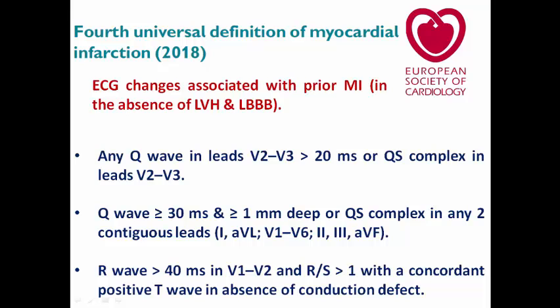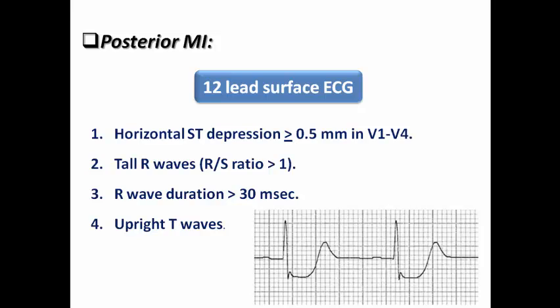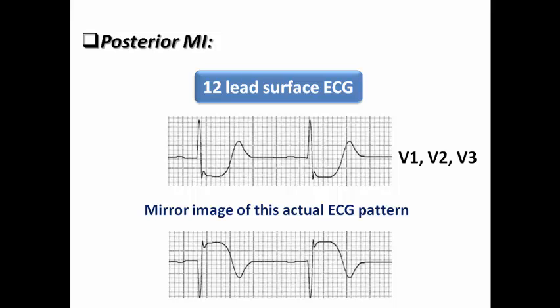Any one of these criteria can indicate prior MI. The last criterion — R-wave duration exceeding 40 ms with R/S ratio more than 1 — reminds us of the criteria for posterior MI (CUMI): horizontal ST depression more than 0.5 mm in V1 to V4, tall R-wave with R/S ratio more than 1, R-wave duration more than 30 ms, and upright T-waves. The R-wave duration exceeding 30 ms in V1-V2 is considered a pathological Q-wave equivalent because V1–V3 are a mirror image of the actual ECG pattern for the posterior ECG leads.